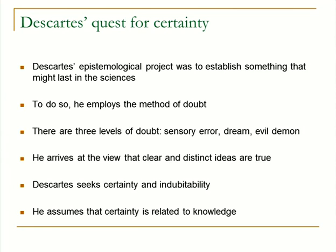On that basis, he comes up with the idea that clear, distinct ideas — things that are clearly and distinctly perceived to be true — are going to be the ones that are true. That becomes his criterion for truth or knowledge. In this, he makes assumptions about the need for certainty in establishing knowledge and the relationship between inability to doubt and certainty.